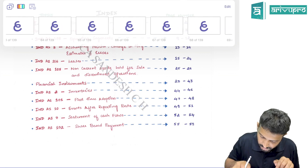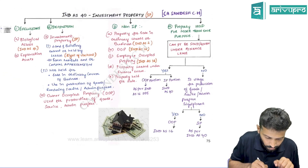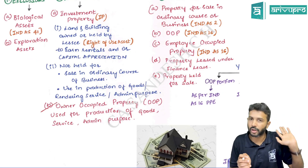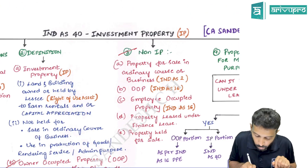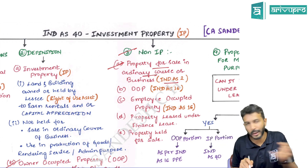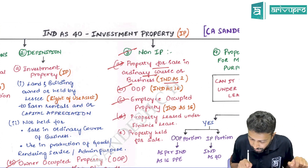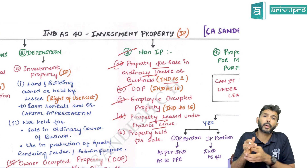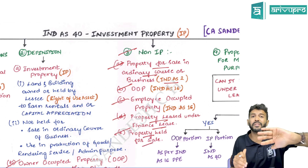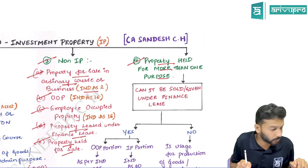Owner-occupied property means property which you are using for production of goods, rendering of service, administrative purpose, or rental purpose. Properties that are not investment property include: one, property held for sale in the ordinary course of business — it becomes inventory. Owner-occupied properties are not investment property. If an employee is occupying your property, Ind AS 16 will apply. If property is given under finance lease, it is not investment property — you must give it under operating lease. If property is held with intention to sell, Ind AS 105 gets triggered, so it is not investment property.